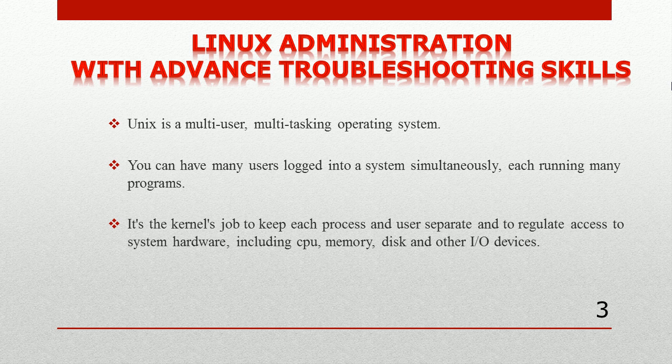UNIX is a multi-user, multitasking operating system — many users log in simultaneously, each running many programs. Apart from that, it is the kernel's job to keep each resource and user separate, and to regulate access to system hardware including CPU, memory, disk, and other devices. The kernel is responsible for allocating memory and CPU time to each process.